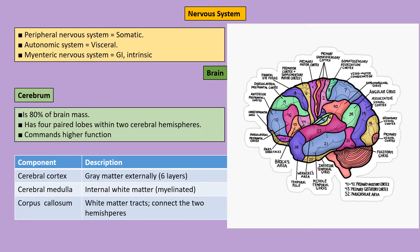Firstly, we should know how we classify the nervous system into central and peripheral nervous systems. The central nervous system is made up of the spinal cord and brain. The peripheral nervous system is somatic and autonomic; autonomic is divided into sympathetic and parasympathetic, and somatic includes 12 pairs of cranial nerves, 31 pairs of spinal nerves, and all the nerve plexuses.